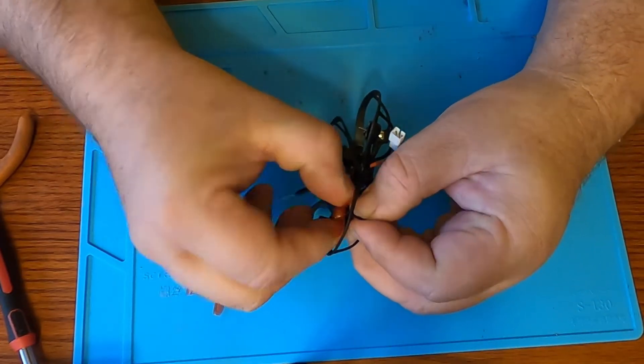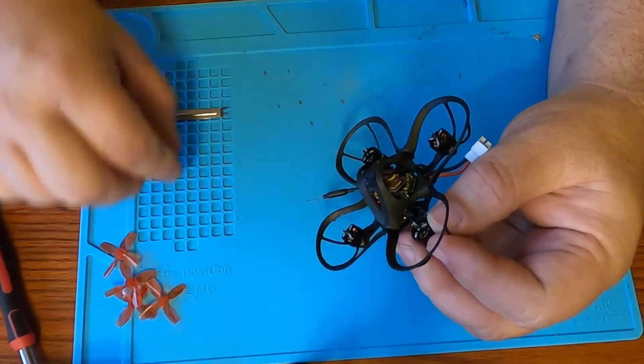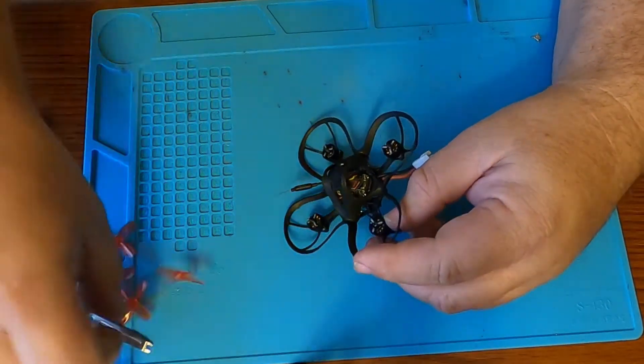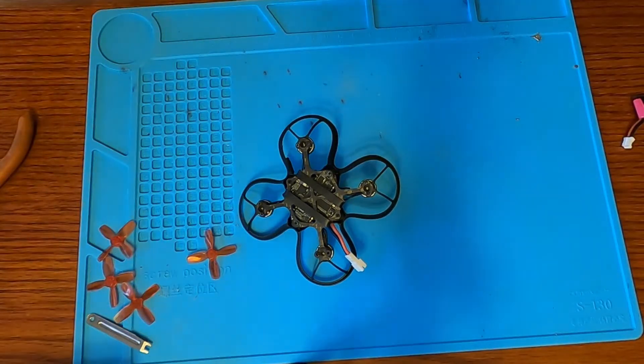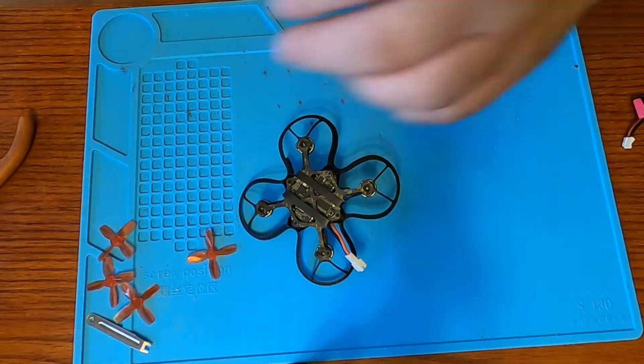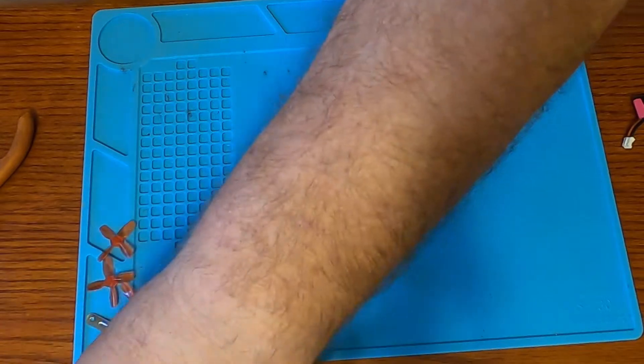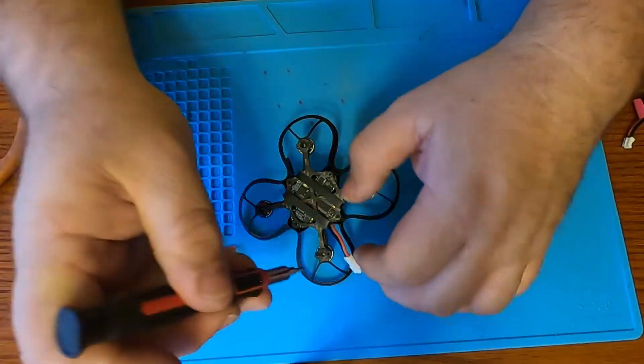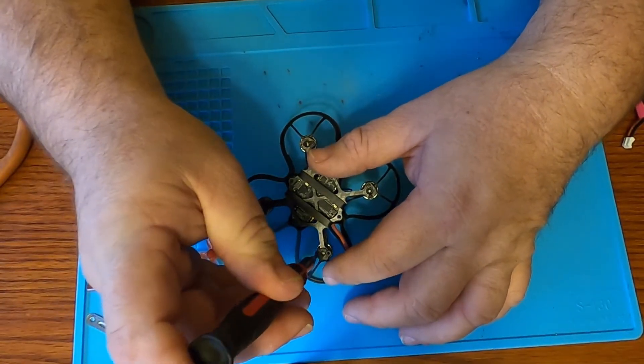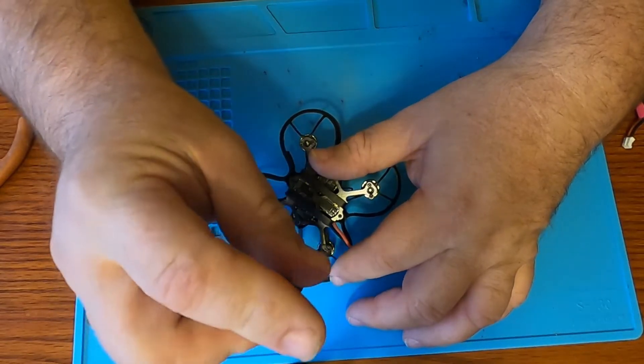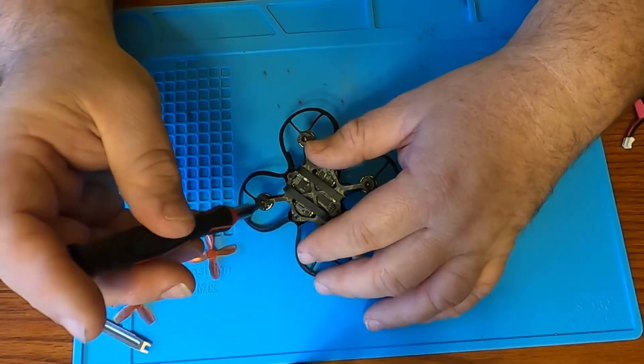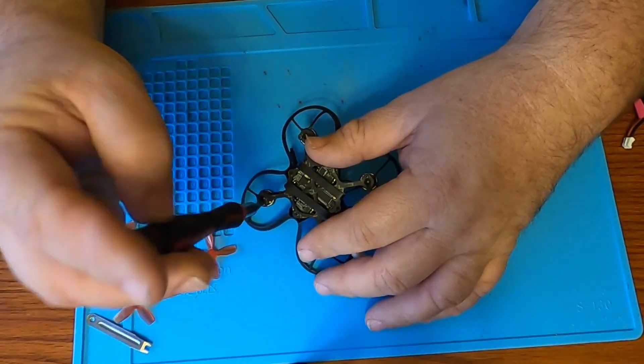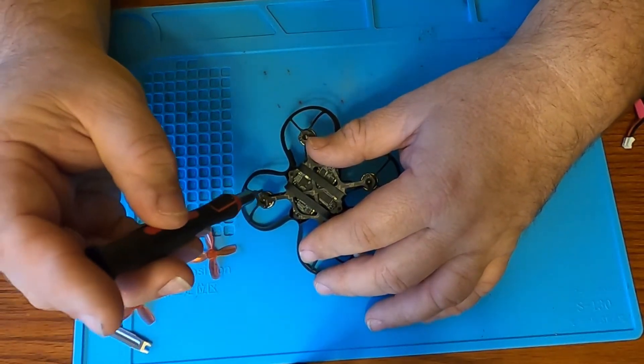This video might be a little longer, but I'm doing it this way for a reason so everybody knows there's no trickery or anything. You'll see I'm already missing one motor screw, which is why this thing is not flying right now. It's waiting for a hardware kit to come in. But you have to take the motors loose.